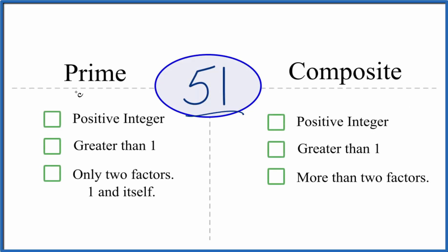The question is whether 51 is a prime or a composite number. And here's how you tell. So let's check first and see if 51 is a prime number.